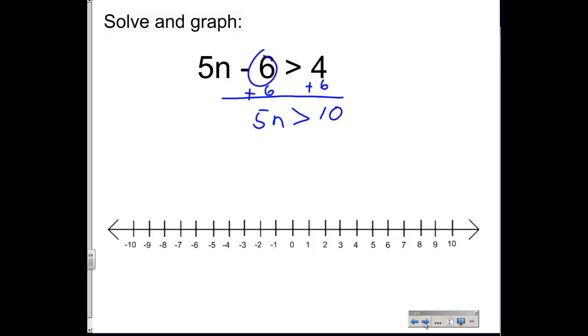Then we're going to divide both sides by 5. So divide by 5, divide by 5. This will become a 1. 1 times n is n, and that's greater than 2. And now we can graph this, and all the solutions that are graphed here will also be the solutions for the original inequality.